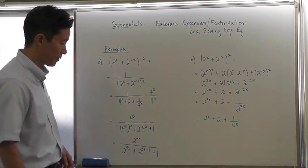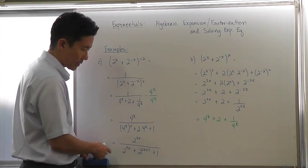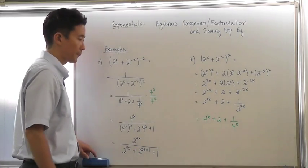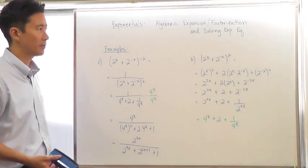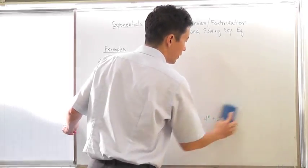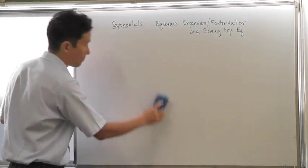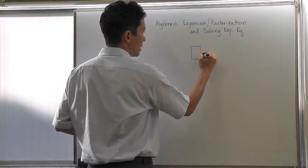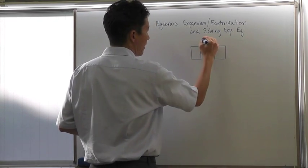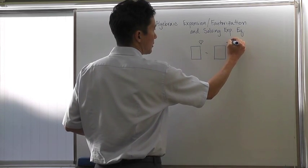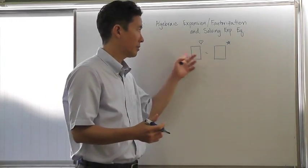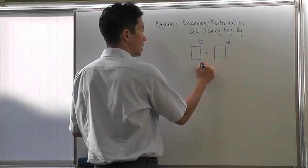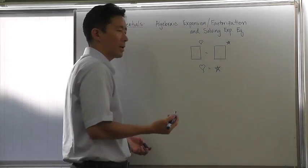That would be your most simplified form if you wanted to change things. So that's 16 raised to the x power, and then you would have to leave that as 2 to the 2x plus 1. Now let's move on and take a look at solving exponential equations. When it comes to solving exponential equations, there's one key thing to remember: if you have the same base on both sides of an equation, in order for the equation to be equal, the exponents must be equal as well.